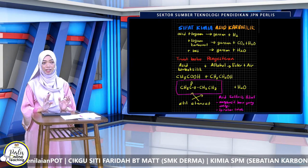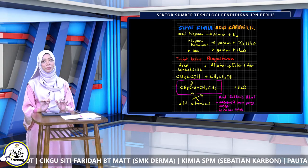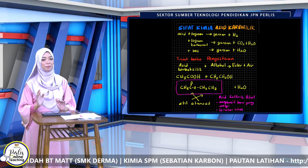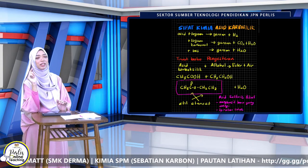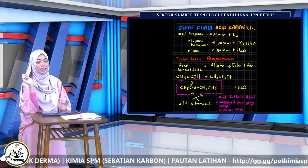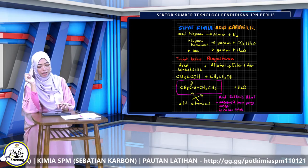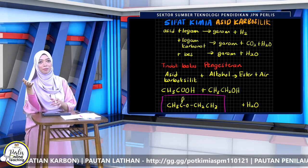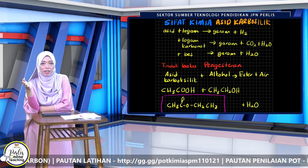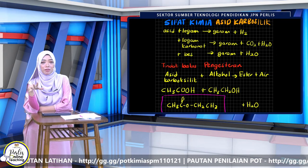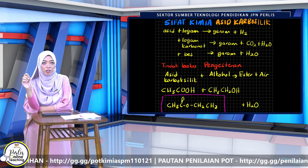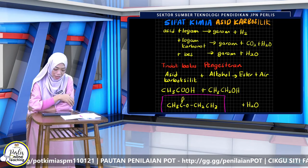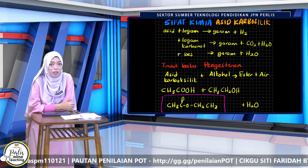Asid karboksilik adalah sejenis asid — sejenis asid lemah. Selalu kita guna asid etanoic. Tindak balas yang boleh dilalui oleh asid adalah sama macam kita belajar sifat kimia asid: asid tindak balas dengan logam reaktif akan hasilkan garam dengan gas hidrogen. Kalau tindak balas dengan logam karbonat, akan hasilkan garam dengan gas karbon dioksida dan air. Manakala tindak balas dengan base akan hasilkan garam dengan air — iaitu peneutralan.